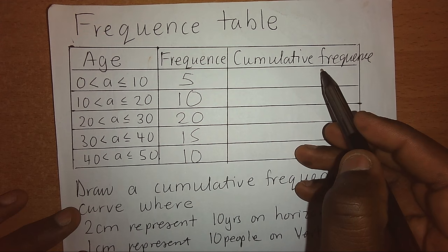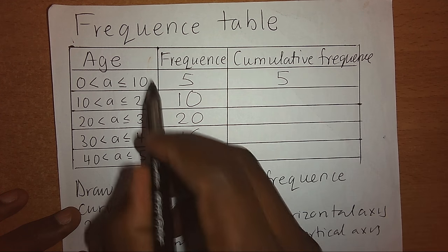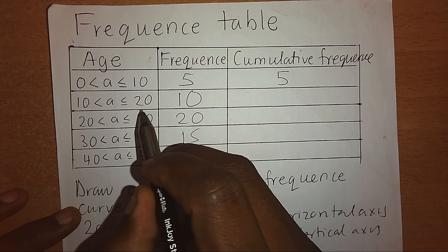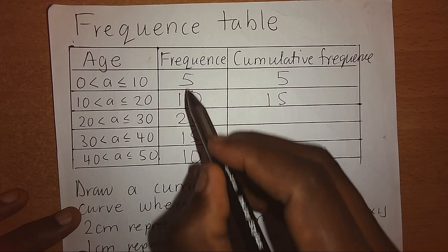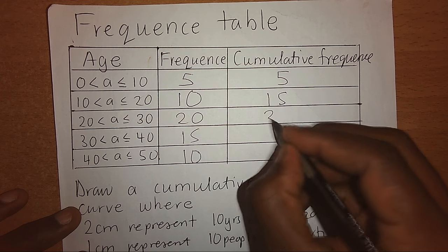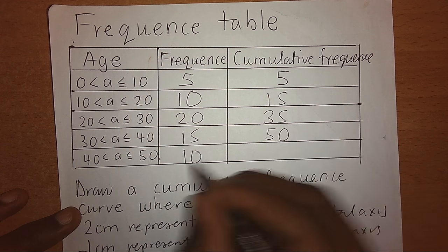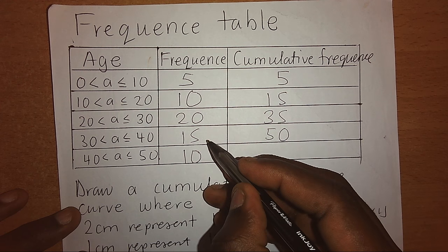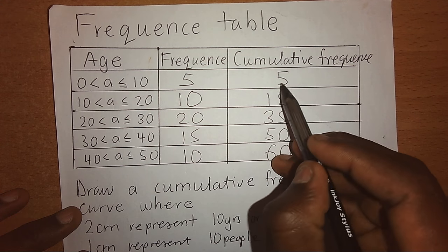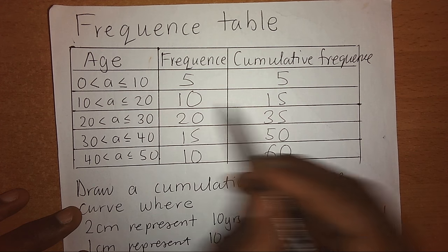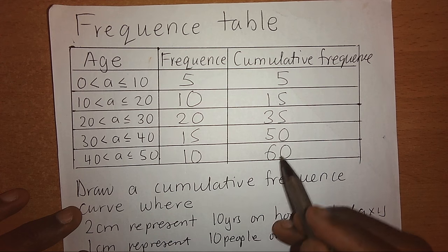Cumulative frequency is the continuous addition of frequencies. The first one we have 5, that is at the end of age 10. At the end of age 20, we shall have the first plus the second giving us 15. At the end of 30 we have 5 plus 10 plus 20 giving us 35. At the end of the next class, 5 plus 10 plus 20 plus 15 giving us 50. And finally, 5 plus 10 plus 20 plus 15 plus 10 gives us 60. That is cumulative frequency.